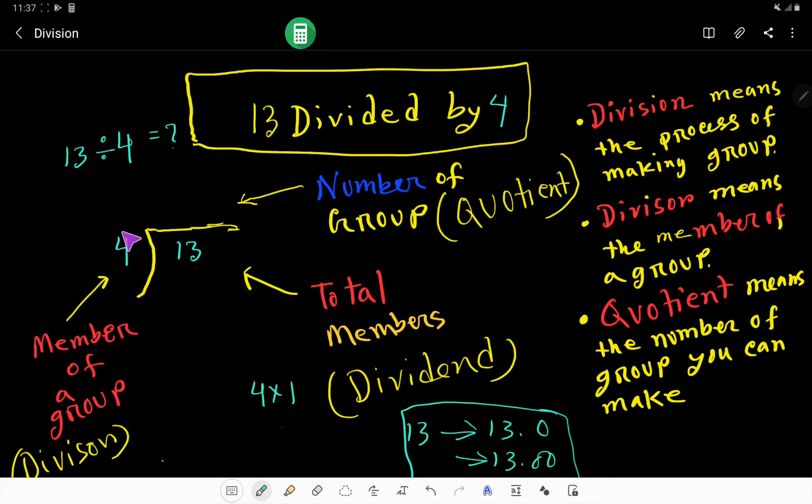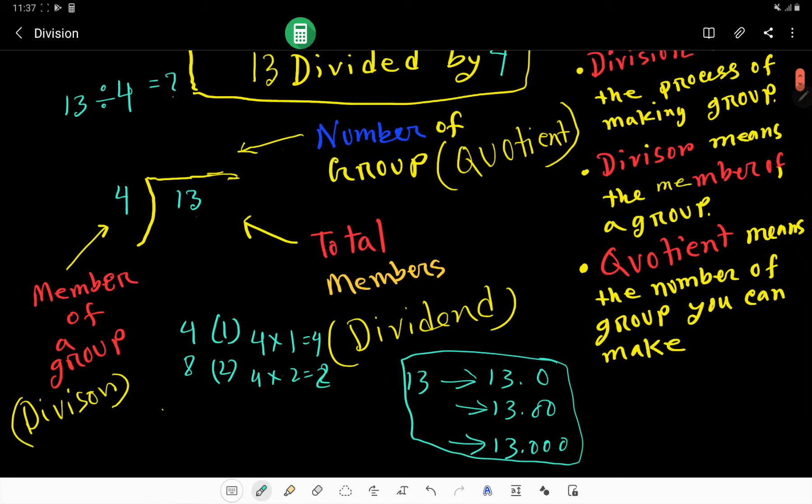4 times 1 equals 4. For 4 times 2, just add 4 with this 4, then we get 8. For 4 times 3, add 4 with this 8 to get 12. 4 times 3 equals 12.